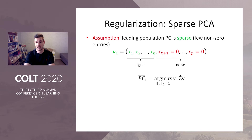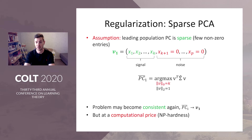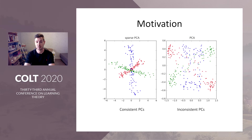As we said, if we directly solve PCA, PC1-bar will probably not converge to V1. Therefore, we add sparsity in the form of this constraint, which may restore consistency, but at a computational price. This variant of sparse PCA is NP-hard.